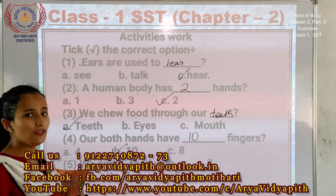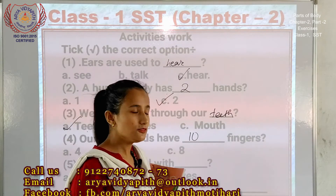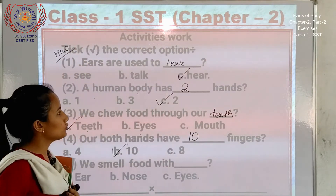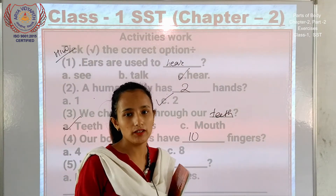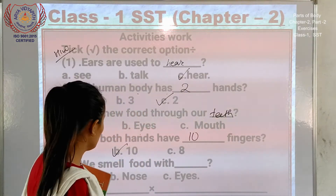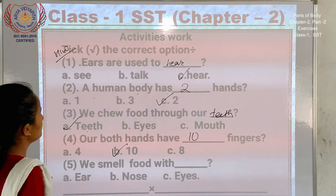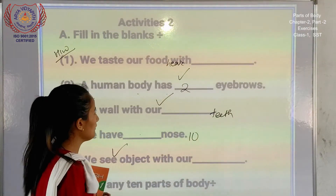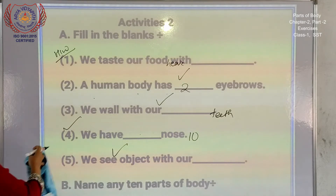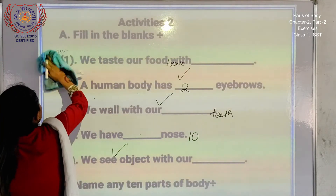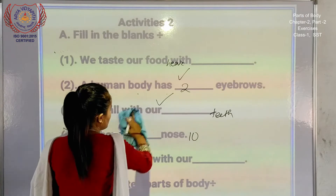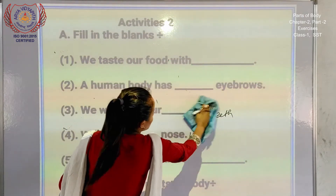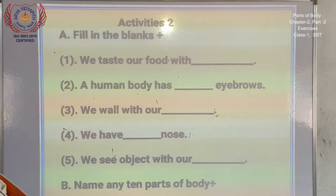Aise karke aap loko ye copy mein karna hai. So do this in your copy. Theek hai? Ye aap loko school ki copy jo mili hai, school ki copy mein karna hai. Theek hai? Next dekhiye — next page mein hai. Activities 2. Ye bhi book mein nahi hai. Maine aap loko ko book se hi question bana kar diya hai. Theek hai, ye activities work hai jo aap loko karna hai.